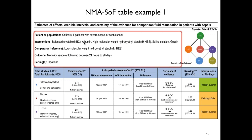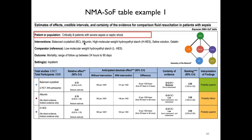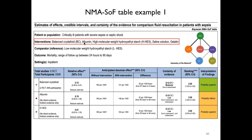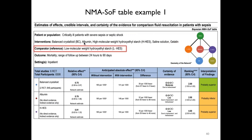For the upper section, this section displays information regarding the PICO components. Starting from the top, we presented the information regarding the patient population of interest. Then we have all the interventions described under the intervention label, except one intervention that is selected as a reference comparator. We suggest different options: a placebo intervention, a gold standard treatment, the best cost-effective intervention, or the least effective intervention.